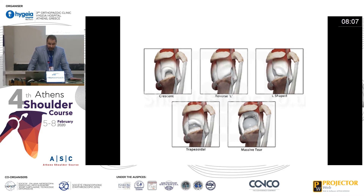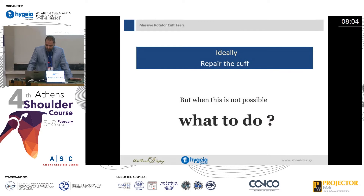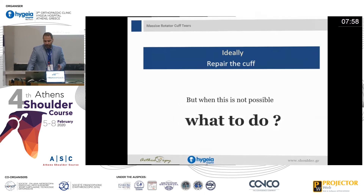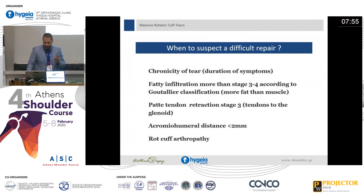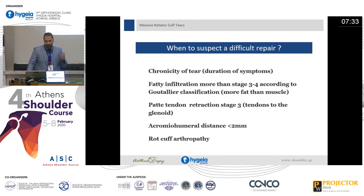Sometimes it's difficult to repair the cuff, and when this is not possible, what must we do? We suspect the rotator cuff is difficult to repair when we have chronicity of the tear, fatty infiltration of the supraspinatus — maybe Goutallier grade three to four or more — a very retracted cuff at stage three where tendons are at the glenoid, proximal migration of the humeral head with acromiohumeral distance less than two millimeters, and of course rotator cuff arthropathy.